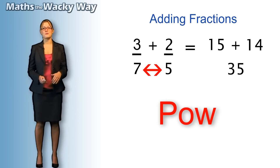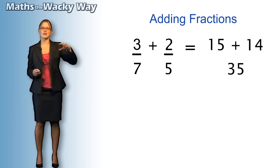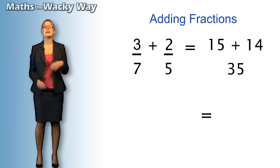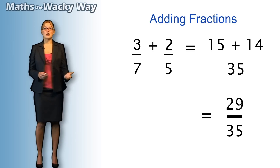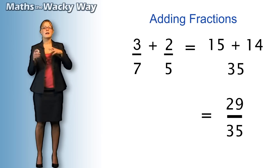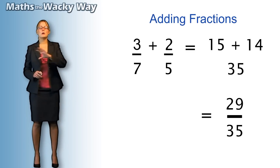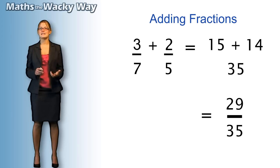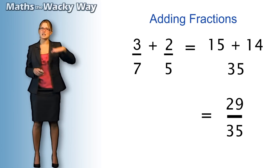Now when we fill those in, we've got fifteen plus fourteen on the top and thirty-five on the bottom. Because we're adding them, we add those at the end: fifteen plus fourteen is twenty-nine, and we leave the thirty-five as it is. So we end up with twenty-nine over thirty-five. To get the answers, we multiplied: boom, boom, pow, and then did that little simplification. Twenty-nine over thirty-five won't simplify further — twenty-nine doesn't appear in any of the times tables.